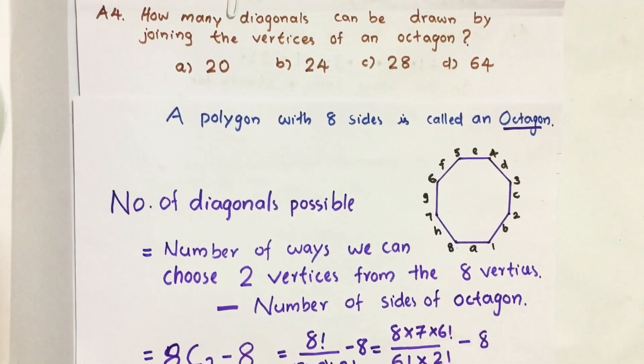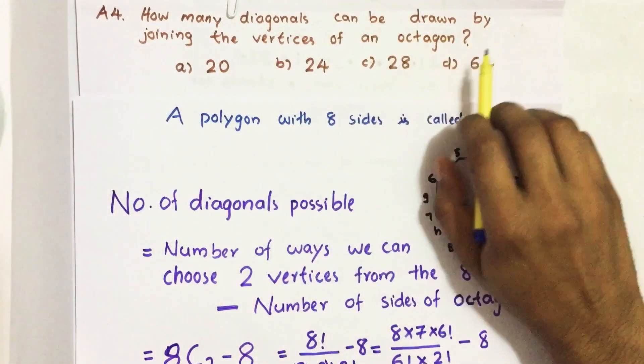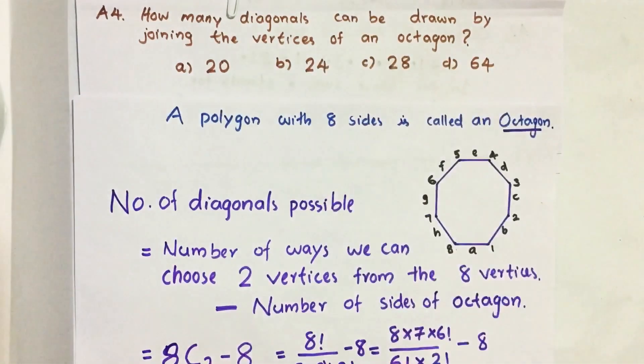Hello everyone, here I am going to solve 2018 CBSE question number 4 from question paper series A. How many diagonals can be drawn by joining the vertices of an octagon?